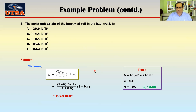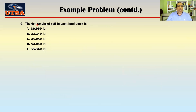Note that the moist unit weight at the construction site was 123.6 pcf — much higher than 103.2 pcf in the truck. This confirms the field site is very highly compacted. Now let's find the dry weight of soil in each haul truck.